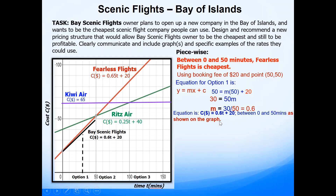As shown on the graph, the equation modelling Bay Scenic Flight is 0.6T + 20. They have the same $20 booking fee as Fearless Flights, but the slope of 0.6 compared to 0.65 makes it cheaper. This line is a little bit cheaper than the previous one, so Bay Scenic Flight is the cheapest for option one and is not losing a lot of money.